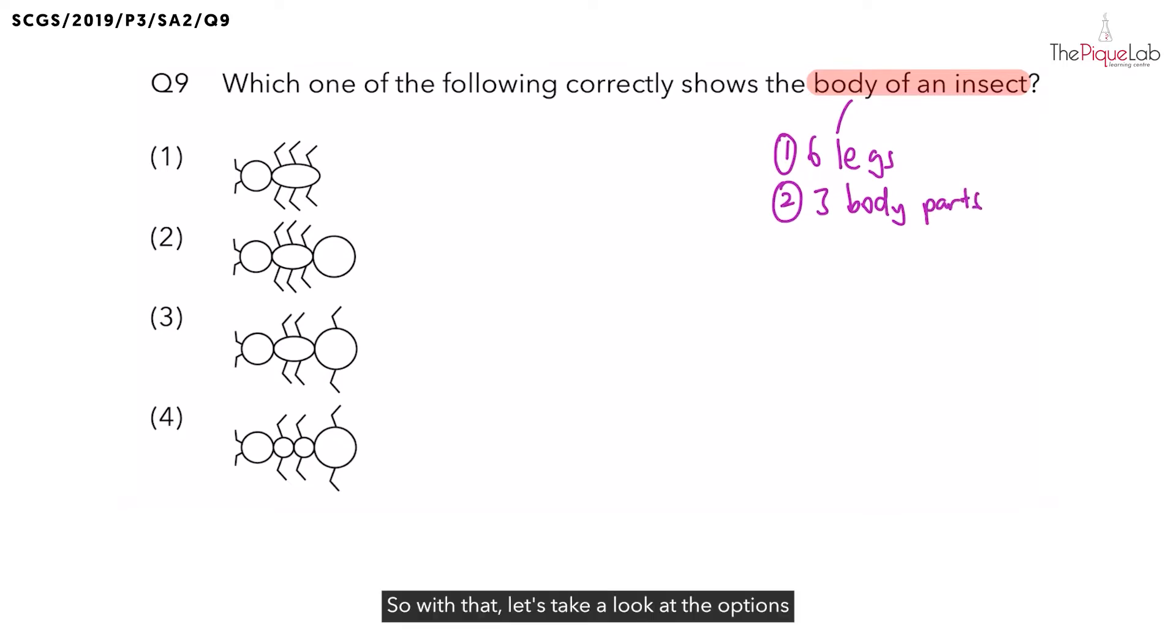So with that, let's take a look at the options and see which of the options show that the bodies have six legs and three body parts. Now taking a look at option 1, does this insect have six legs? Yes, there are six legs. But does this insect have three body parts? For option 1, there is one and two body parts only. But since this insect only has two body parts, can option 1 be the answer? No, so let's cross out option 1.